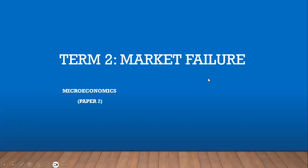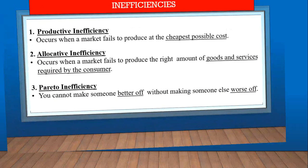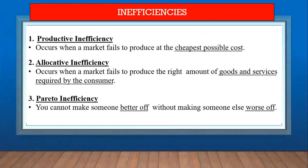Welcome to market failure. The market will fail if there are inefficiencies. There are three types of inefficiencies in the market. Number one is productive inefficiency, which occurs when the market fails to produce at the lowest possible cost. The second type is allocative inefficiency, which occurs when the market fails to produce the right amount of goods and services that consumers want.